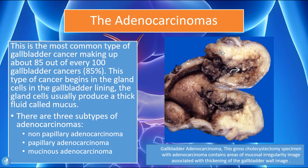Adenocarcinomas are the most common type of gallbladder cancer, making up about 85% of all gallbladder cancer cases. This type of cancer begins in the gland cells in the gallbladder lining, which usually produce a thick fluid called mucus. Adenocarcinomas can be divided further into three subtypes: the non-papillary adenocarcinomas, the papillary adenocarcinomas, and the mucinous adenocarcinomas.